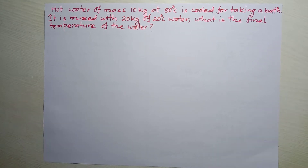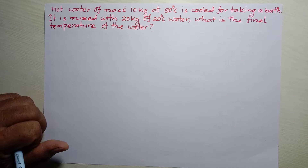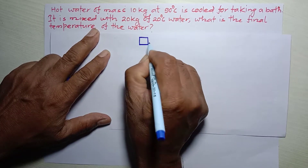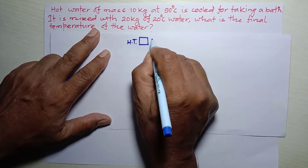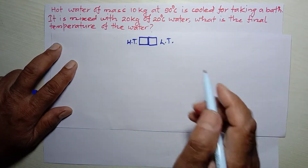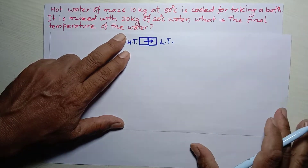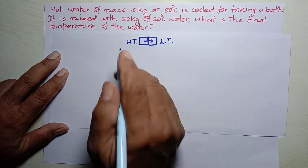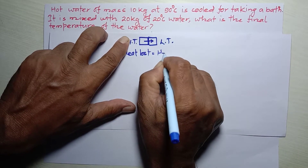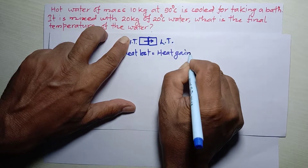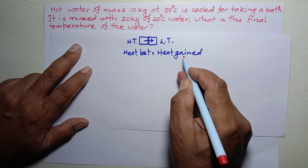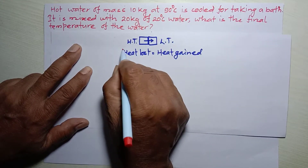Before solving this numerical problem we must have some idea about heat transfer. If a substance has high temperature and another has low temperature and they are made in contact with each other, then heat always flows from a body at high temperature to a body at low temperature. According to the principle of calorimetry, heat lost is equal to heat gained — the hot object loses heat energy and the cold object gains heat energy.